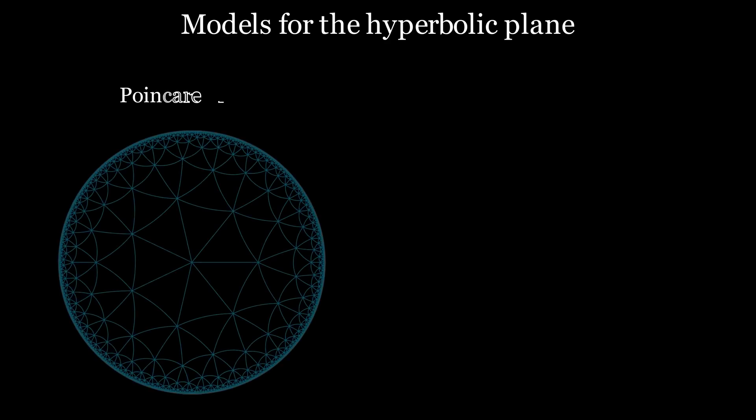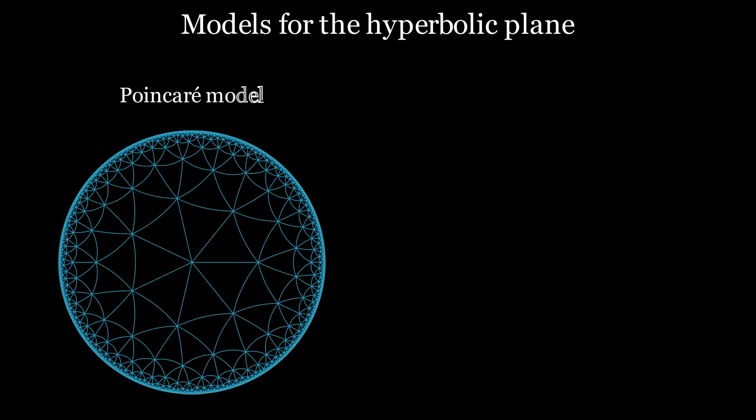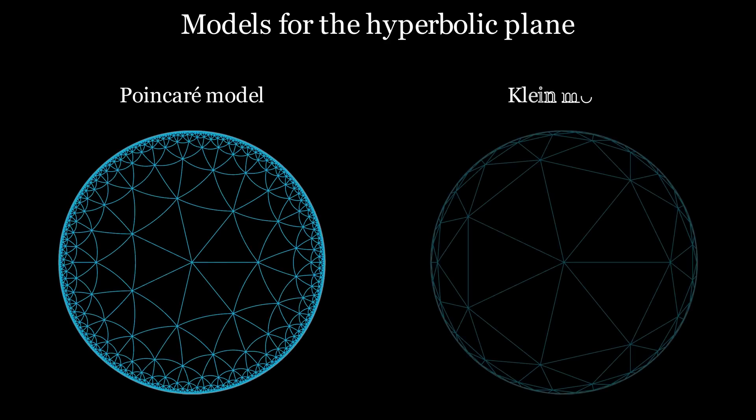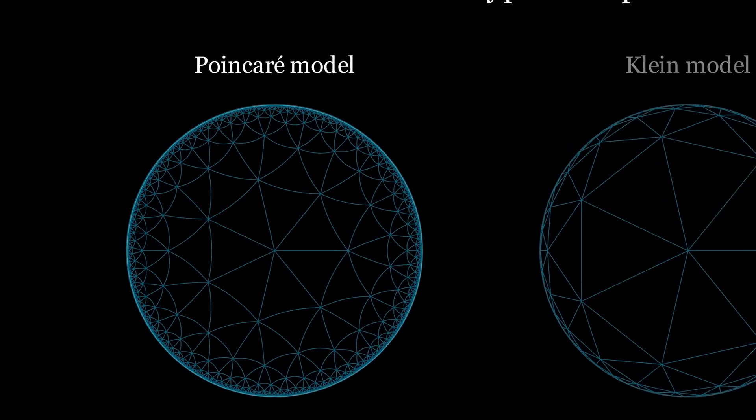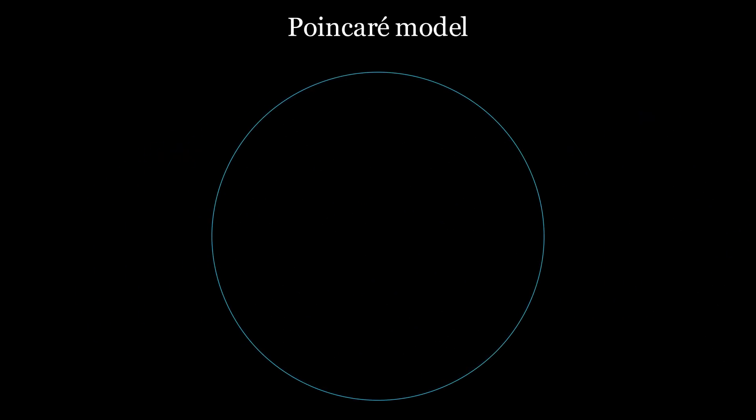Such models simply map the hyperbolic to the Euclidean plane. We take a closer look at the Poincaré and Klein models. There are, however, multiple other models which can be helpful in other contexts. First, let's take a closer look at the Poincaré model.